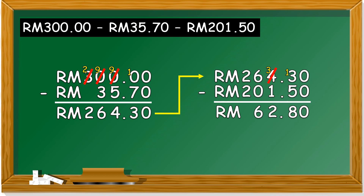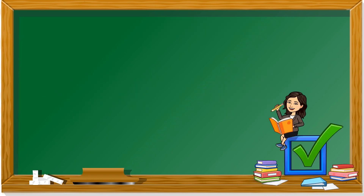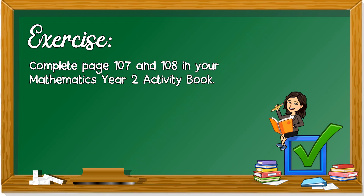If you are not good at numbers above 100, don't worry — all the examples in the activity books are less than 100. I'm giving you an example with more than 100 for you to think further. Subtraction of money is easy — it's just like the subtraction we have learned earlier in the year, just with ringgit and sen. The exercise for today is to complete pages 107 and 108 in your Mathematics Year 2 activity book. Thank you, class, and see you again in the next session. Goodbye!